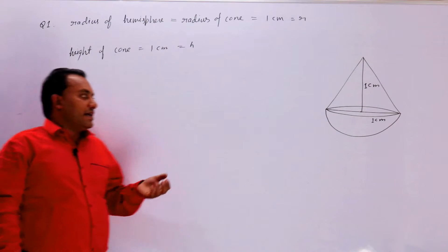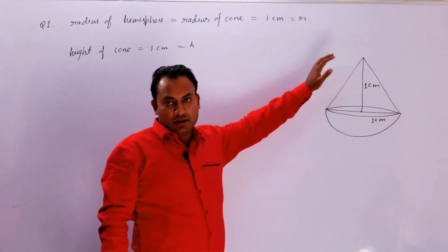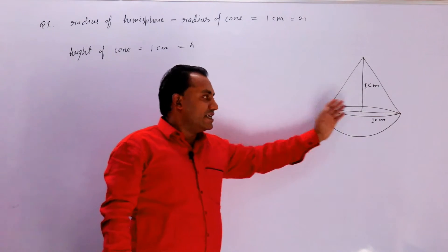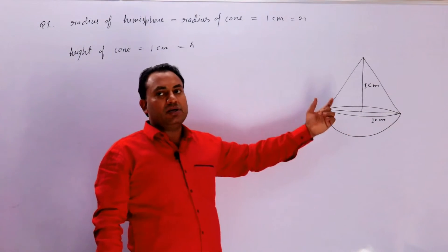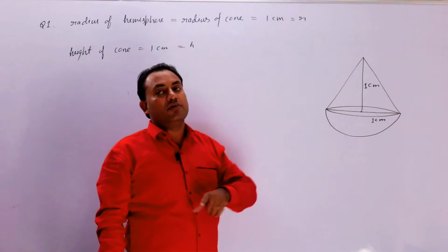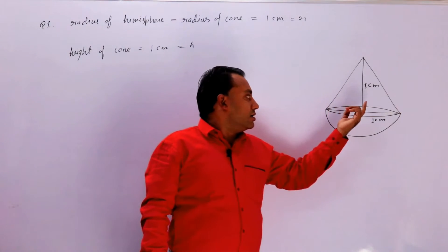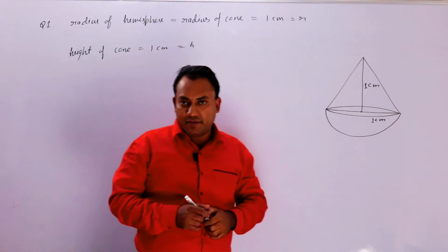बच्चे, इस question में कहा गया है कि एक solid इस प्रकार से है कि एक hemisphere पर cone खड़ा है, stand करता है. दोनों की radius same है. मतलब cone की और hemisphere की और height of cone is equal to radius of cone.